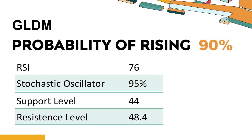The probability of GLDM share price rising is 90%. When the probability of rising is higher than 50%, it means that the stock has a higher chance of rising. If the probability of rising is lower than 50%, it means that the probability of falling is high. Combining multiple technical analysis indicators, GLDM has four bullish signals and three bearish signals.